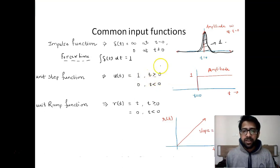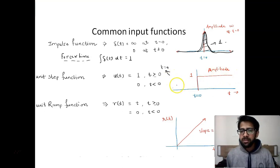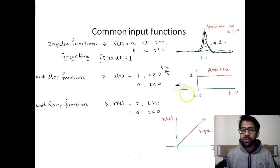For t equal to zero, you can assume this is the time when you switch on the fan or light. After t equal to zero you are giving constant input, and before that there was no input, so the amplitude of output is zero.